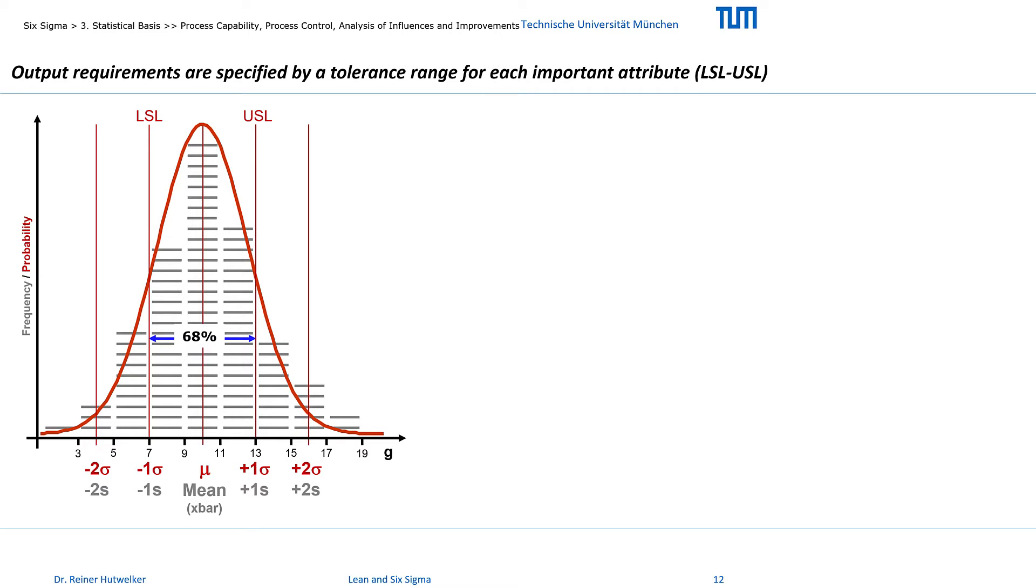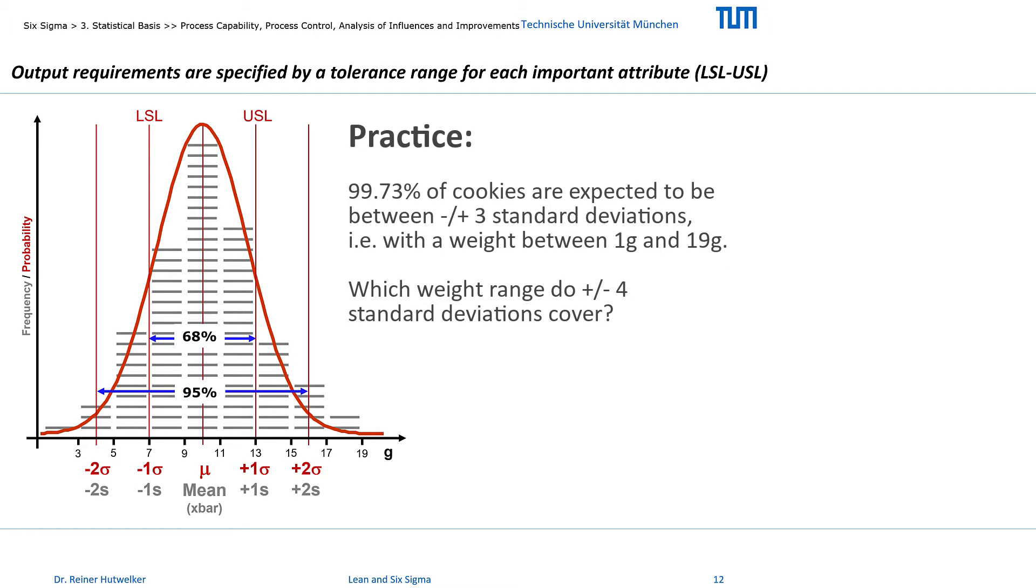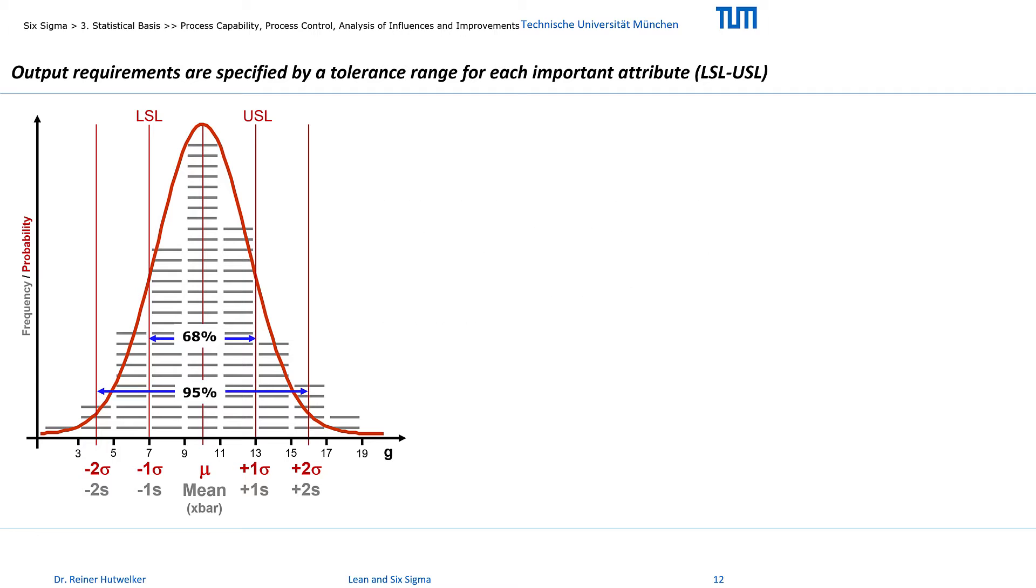You probably also remember that the area between minus 2 and plus 2 standard deviations covers about 95% of the cases and 99.73% of our cookies fall between minus 3 and plus 3 standard deviations. If now, accidentally, the lower and upper specification limits for our cookies fall on minus 2 and plus 2 standard deviations, then our process has a capability of 2 sigma which is equivalent to a yield of about 95%.